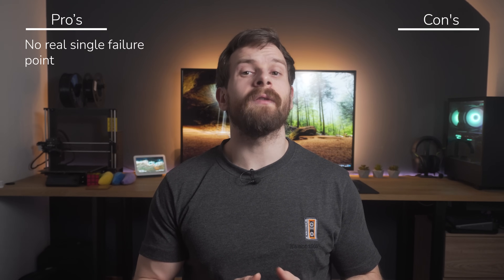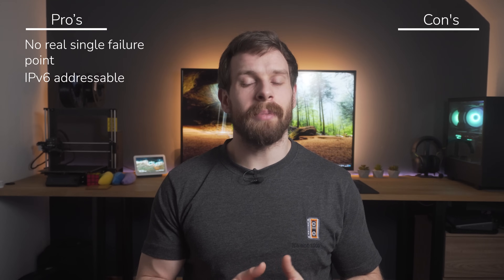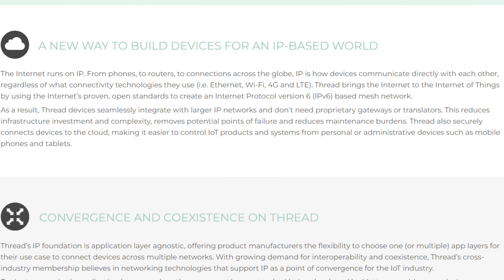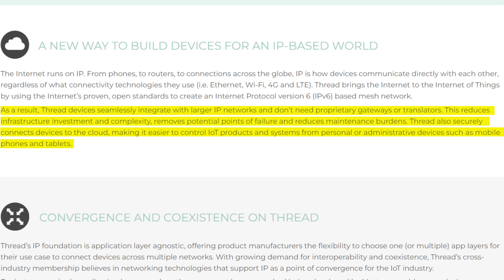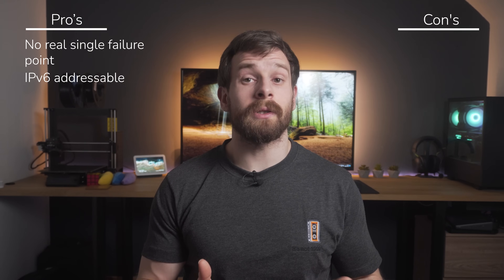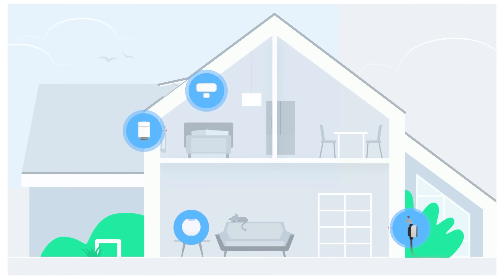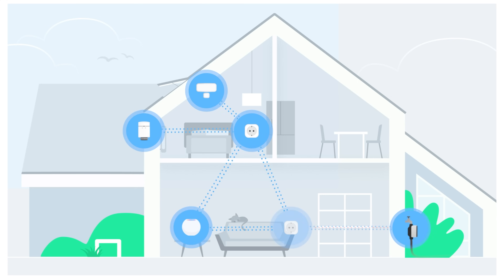Another big advantage of Thread is that it's IPv6 addressable. That means devices can talk directly to the internet or to each other using the widely adopted standard of internet protocol, or IP. In turn, Thread devices will be able to communicate with other Thread devices without having to worry about speaking another brand-specific language, which should be good for interoperability.